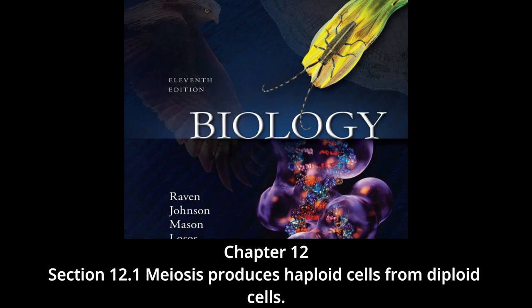Somatic tissues: the life cycles of all sexually reproducing organisms follow the same basic pattern of alternation between the diploid and haploid chromosome numbers. After fertilization, the resulting zygote begins to divide by mitosis. This single diploid cell eventually gives rise to all of the cells in the adult — these are called somatic cells. Every one of the adult somatic cells is genetically identical to the zygote. In unicellular eukaryotic organisms including most protists, individual cells function as gametes, fusing with other gamete cells.